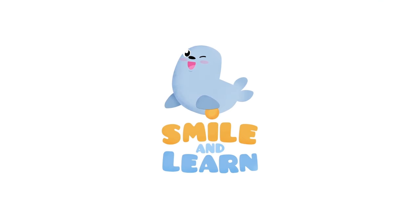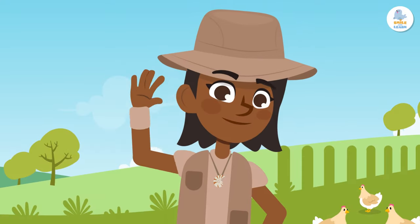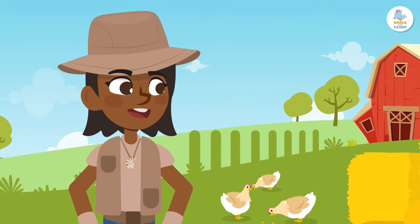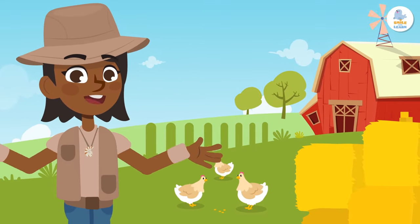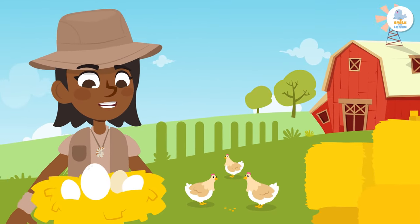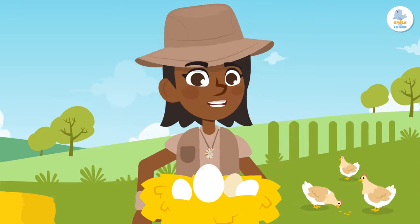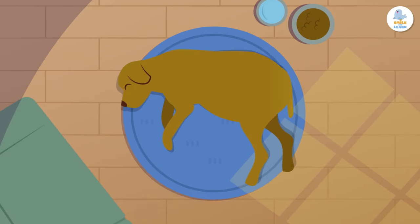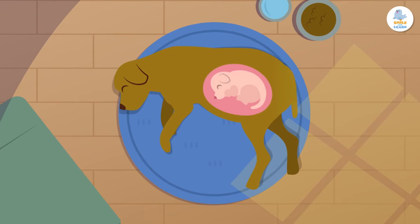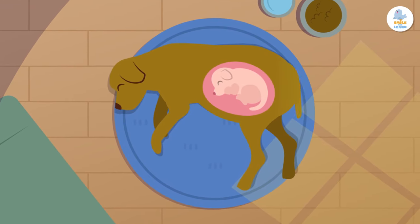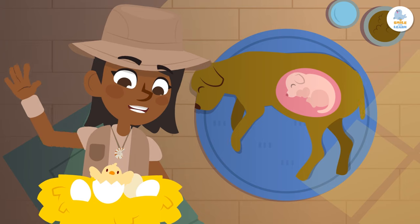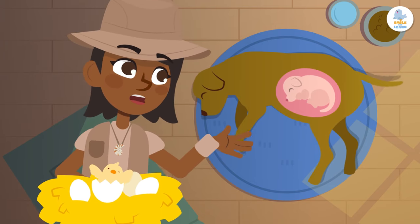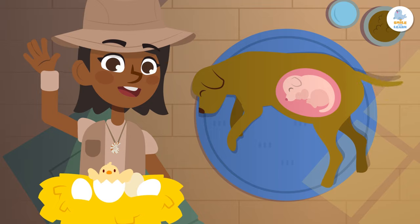Smile and Learn! Hi friends! Today we're going to see how to classify animals by their reproduction. I'm sure you already know that chicks are born from eggs, and puppies grow in their mother's wombs. Do you want to learn about the different ways animals reproduce? Let's dive right in!